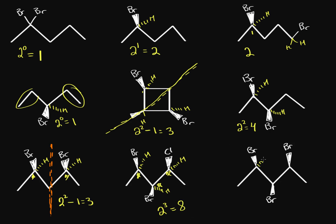What about this one? Each bromine has a hydrogen behind it. We have hydrogen, bromine, methyl, and the rest of the chain — definitely chiral. Bromine, hydrogen, rest of the chain, and methyl — clearly chiral. On this one, we have a bromine and hydrogen, but then two ethyl groups, each with a bromine on the first carbon in exactly the same position. Not only do we have a line of symmetry, but this carbon isn't even chiral because those two groups are exactly the same. So we only have 2 to the 2 chiral carbons with a meso structure, giving us 2 to the 2 minus one — three stereoisomers.